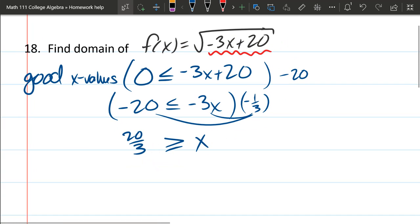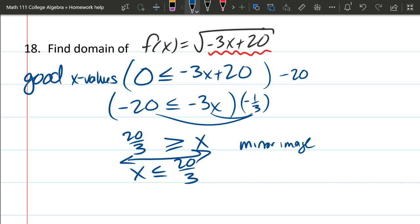I like to have the little quantity on the left, so I'm gonna take a mirror image. And that gives me x is less than or equal to 20 thirds. So I've swapped everything. Swapped the quantities and the inequality turned backwards as well.